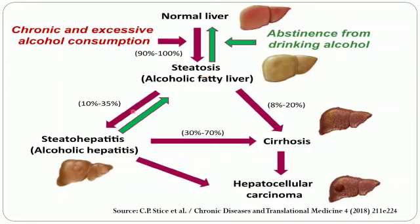Steatosis can progress to steatohepatitis, which is alcoholic hepatitis. From here the liver can develop cirrhosis or directly progress to hepatocellular carcinoma. Steatosis can also progress directly to cirrhosis, and from cirrhosis to carcinoma. Notably, the progression from normal liver to steatosis and from steatosis to steatohepatitis are reversible — if there is abstinence from alcohol, the liver may return to a healthy state. However, once cirrhosis or carcinoma has initiated, it is difficult for the liver to resume normal function.